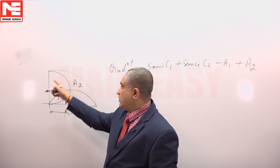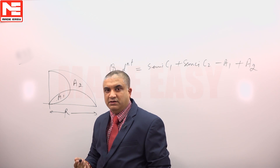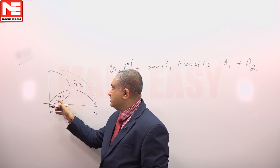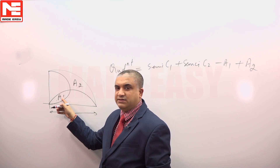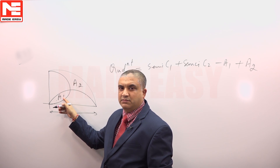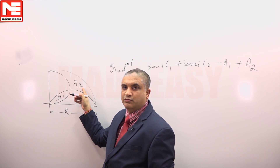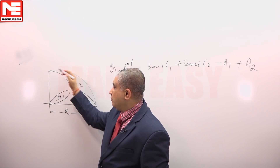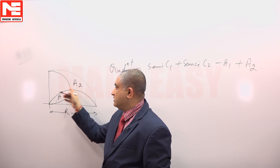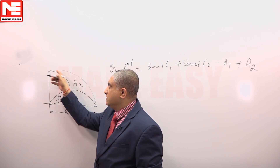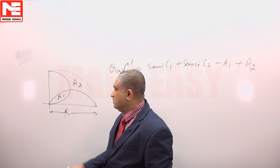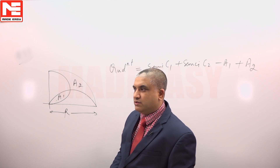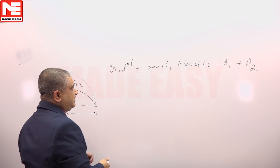This quadrant of a circle is the sum of the area of two semicircles minus the common area between them, plus the area which is not included. The overall area of the quadrant is given by the sum of area of semicircle 1 plus semicircle 2, minus the common area, plus the area not included. It is fairly simple.